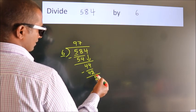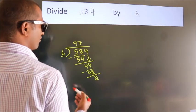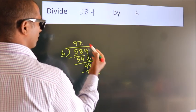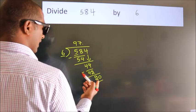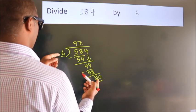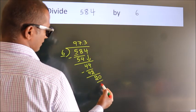After this, no more numbers to bring down. So what we do is we put a dot and take zero. So 20. A number close to 20 in the sixth table is 6 threes, 18.